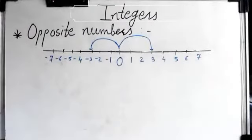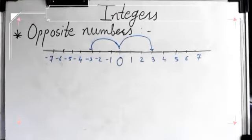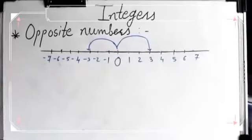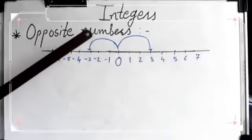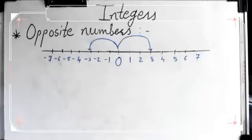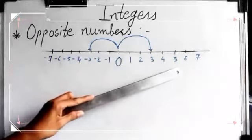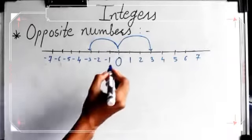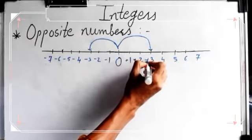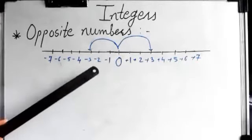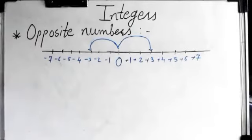We have completed practice set 5, where we saw the rules for addition. Now today let's begin with a new point: opposite numbers. I have drawn a number line here. In the middle is zero. To the right of zero, all positive numbers are there — you can write a plus sign, or if you don't write it, it is still plus.